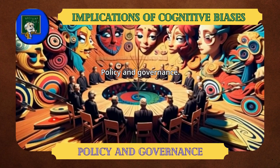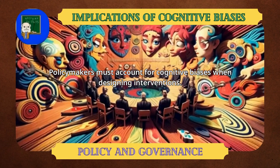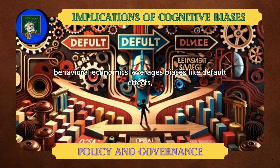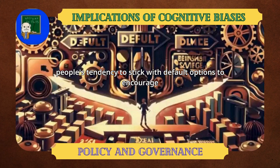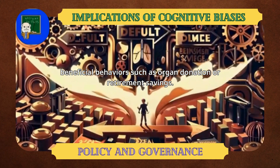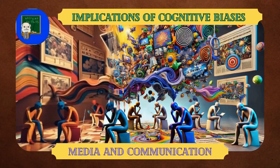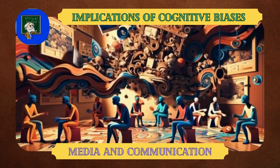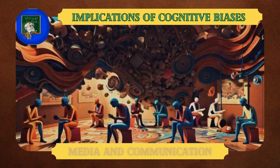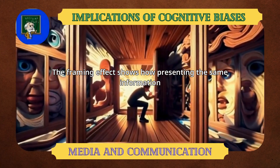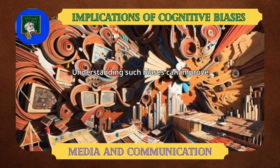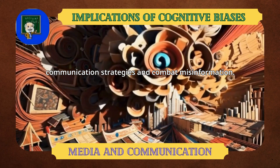Policy and Governance: policymakers must account for cognitive biases when designing interventions. For example, behavioral economics leverages biases like default effects — people's tendency to stick with default options — to encourage beneficial behaviors such as organ donation or retirement savings. Media and Communication: cognitive biases shape how individuals consume and interpret information. The framing effect shows how presenting the same information differently can alter perceptions, and understanding such biases can improve communication strategies and combat misinformation.